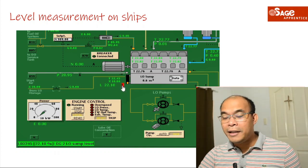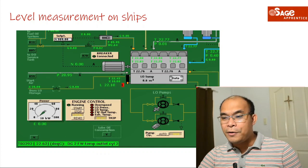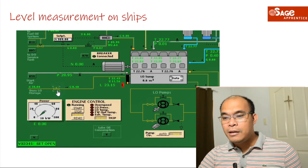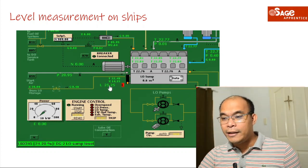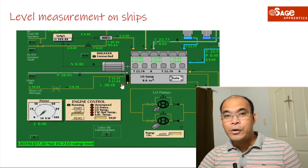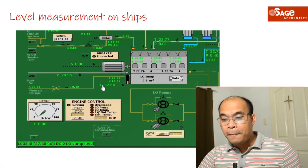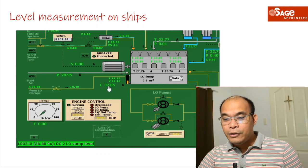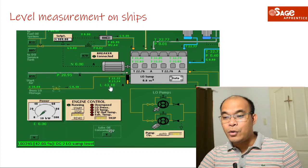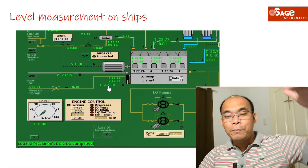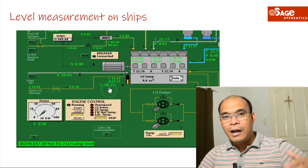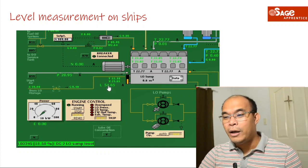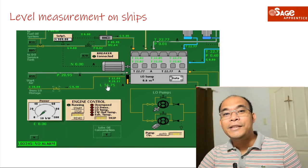First, we have to acknowledge the alarm and then silence it. Then let's open the valve. As we can see, the level is increasing. The unit shown at the lower part is in percentage — it reads 36 percent. So the unit is percent, indicating what level the lube oil is at inside our diesel generator.